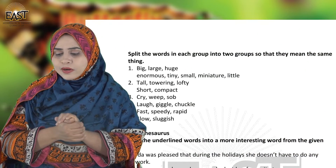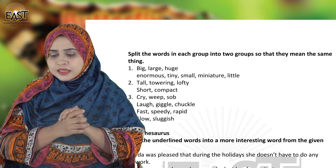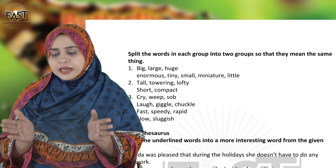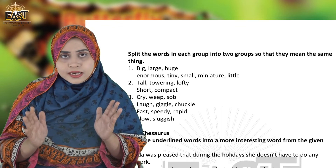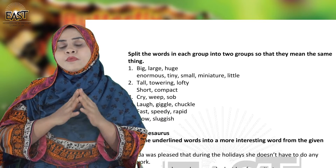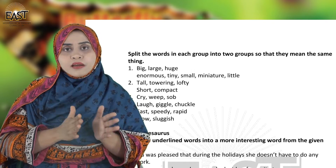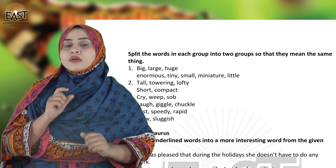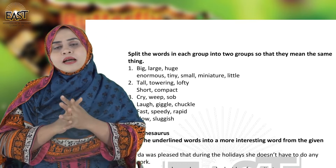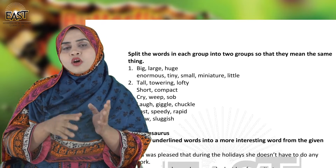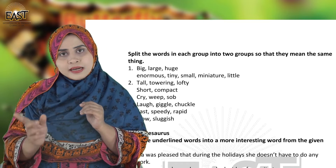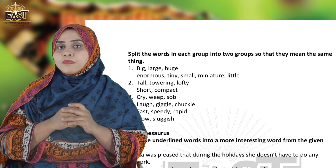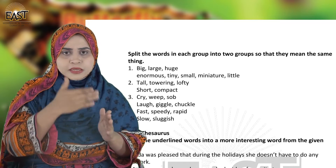The exercise is: split the words into two groups so that they mean the same thing. Yani, jo words hamare paas diye gaye hain, unhe do groups mein divide karna hai. Aapne dekhna hai ke ek group mein same meaning wale alfaz hon. Aapne Group 1 aur Group 2 karke beech mein column banana hai.